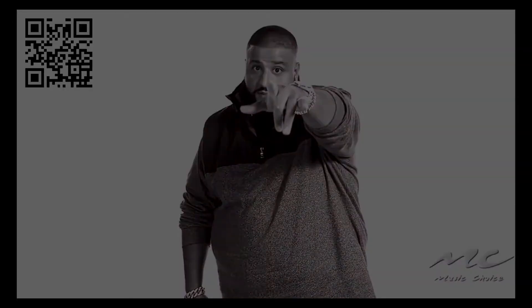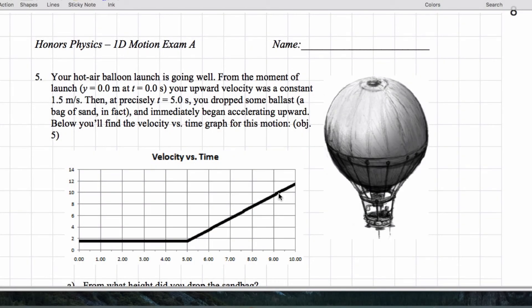You're a genius! Alright, question number five. We have a hot air balloon launch, and then we drop some ballast and accelerate upwards, and we're gonna find the velocity versus time graph for this motion below.